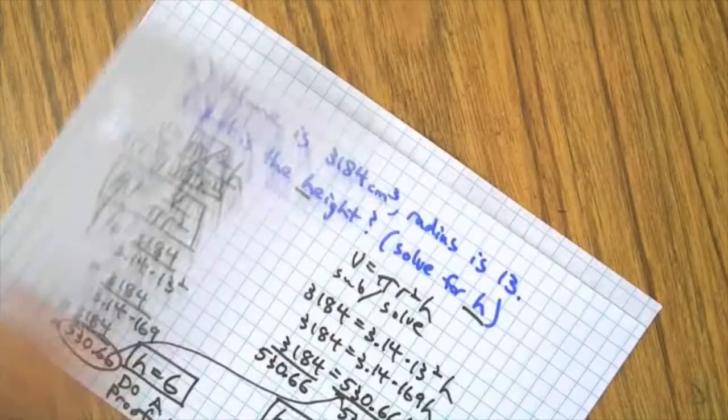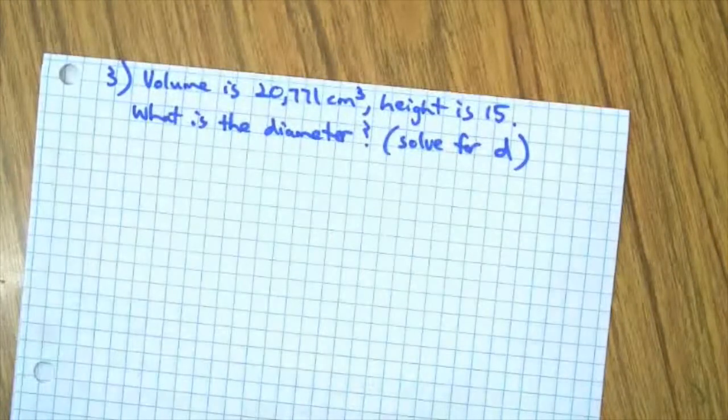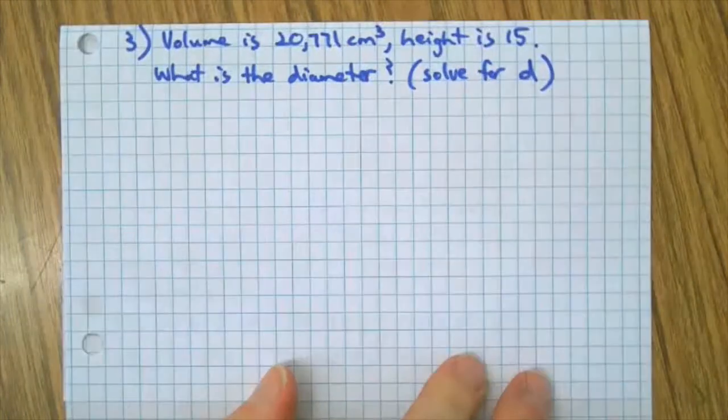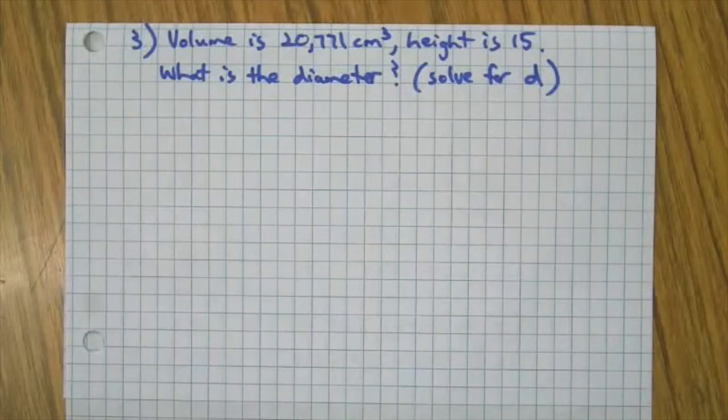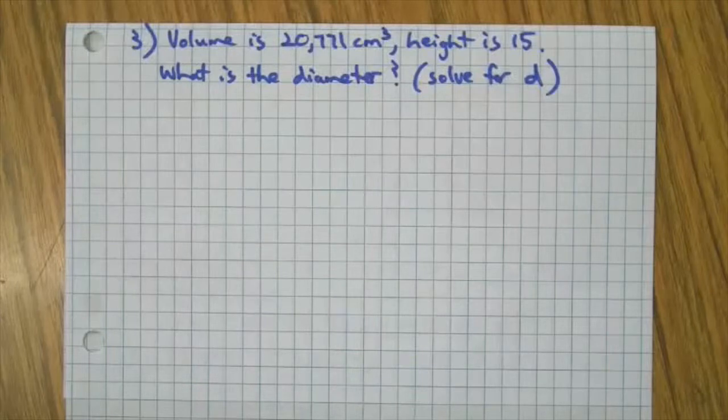Finally, we have one more problem and then we'll be done with this practice. I've got a volume of 20,771 cubic centimeters and a height of 15. Solve for d—find the diameter. Hit the space bar and then we'll do this one.